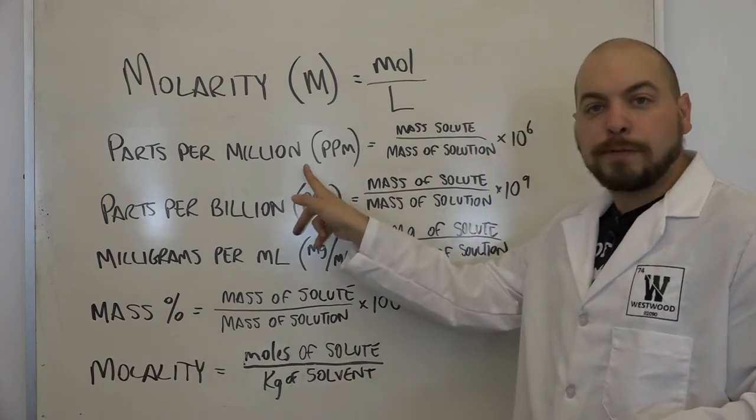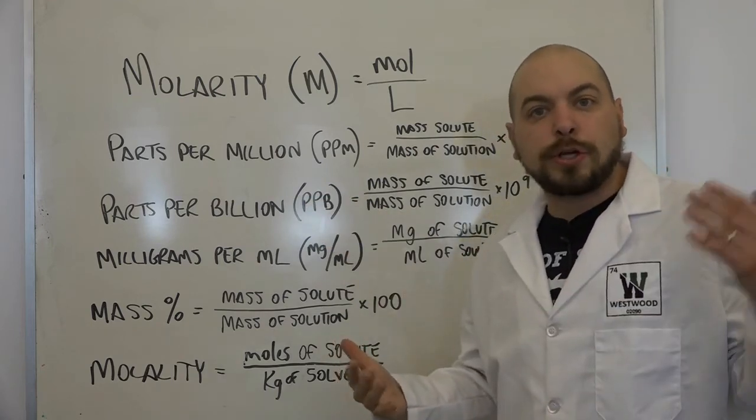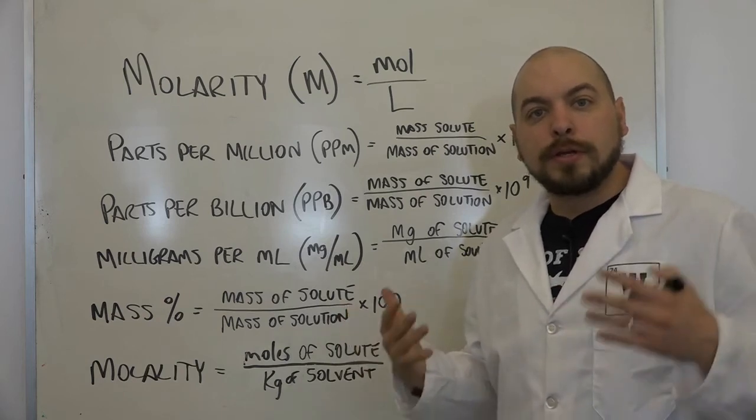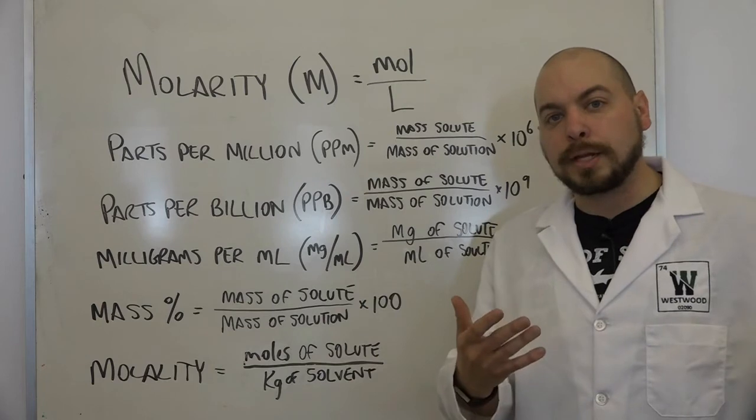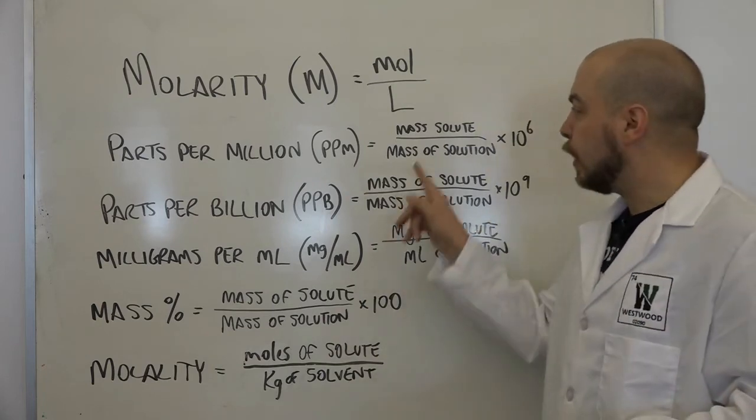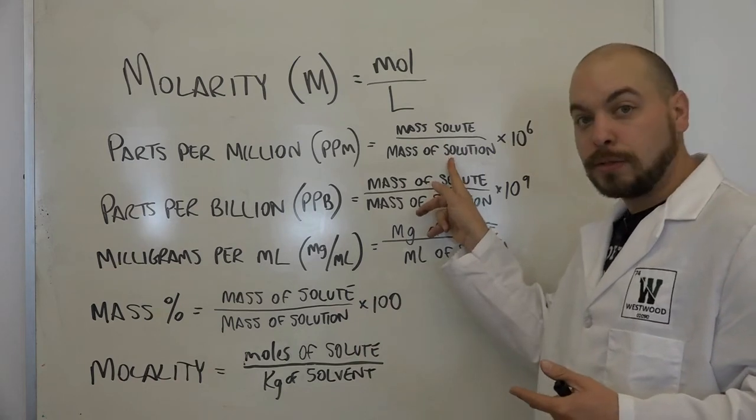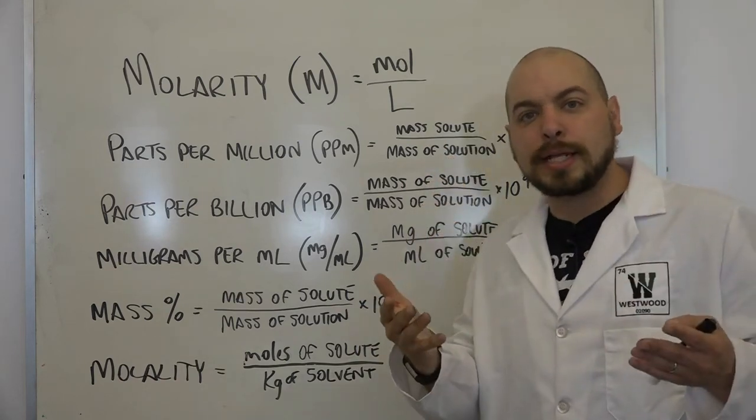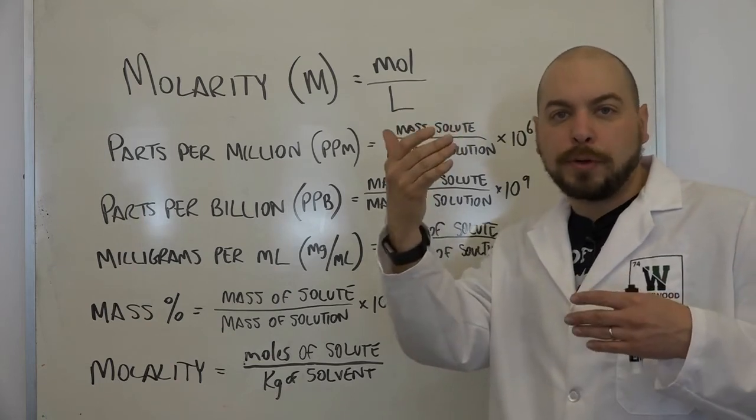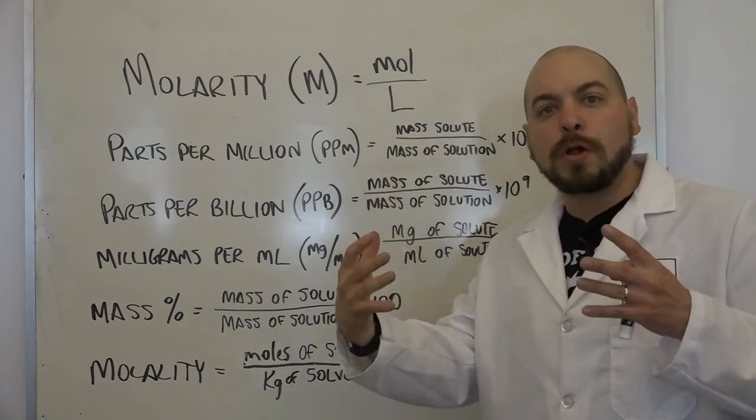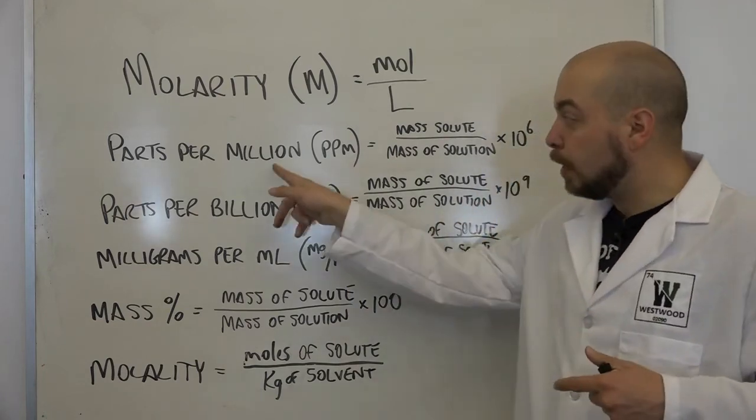Parts per million, for example, if you're ever looking at a graph that shows carbon dioxide values in the atmosphere, you're oftentimes going to see it listed as 400 parts per million. What that really means is that it's the mass of the solute over the mass of the solution. What that really is saying is that it's the grams of whatever the minor component is divided by the overall mass of the solution. You then multiply that by 10 to the sixth because it's million.